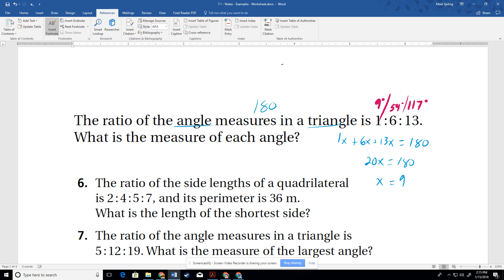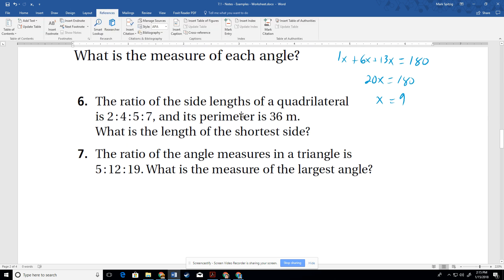All right. So next one, we have the ratio of the side lengths of a quadrilateral is 2 to 4 to 5 to 7. So again, that's 2 to 5. I skipped 4 to 4 to 7. And we know that the perimeter, so all those sides added up, is 36. So we get 18x equals 36, right? So we get x equals 2.